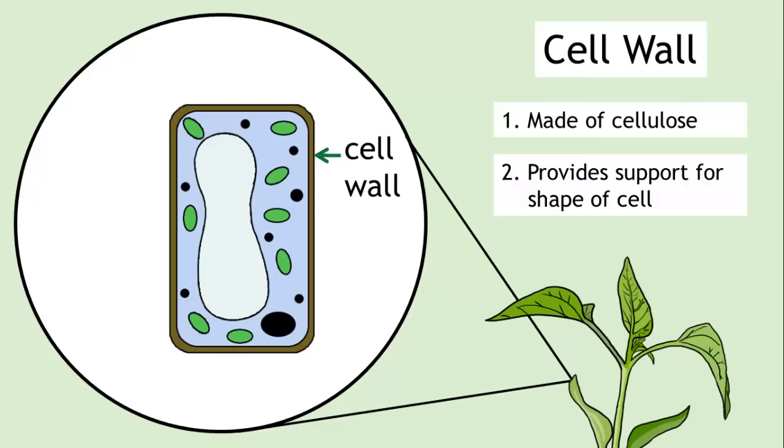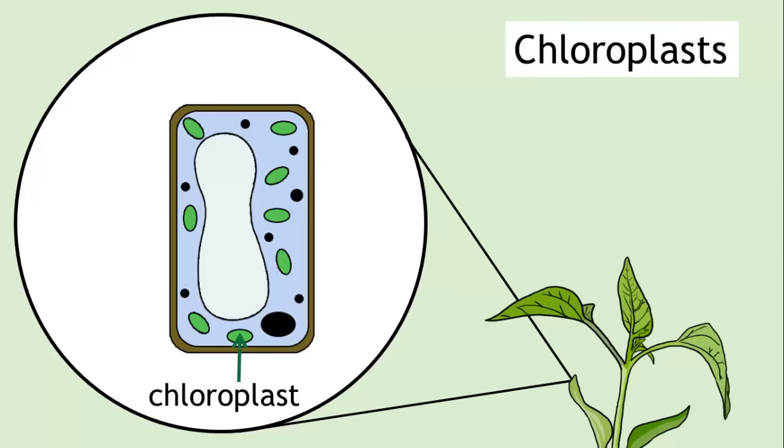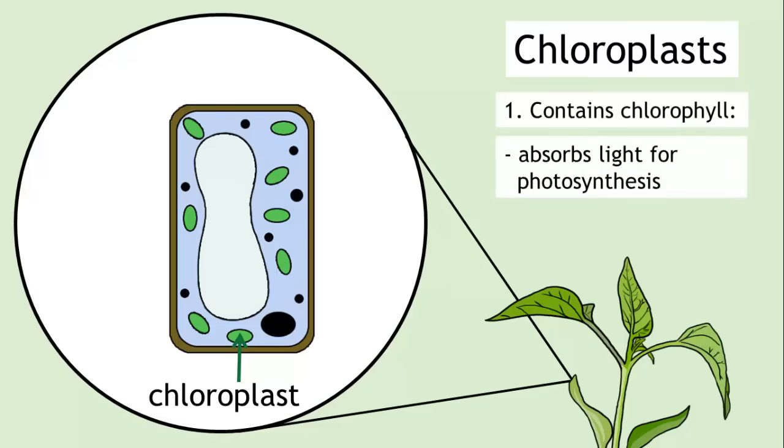Plant cells also contain chloroplasts, which are filled with a chemical called chlorophyll. Chlorophyll enables plant cells to absorb light so it can be used in photosynthesis. Chlorophyll is also the substance that gives plants their green colour.